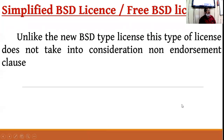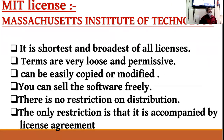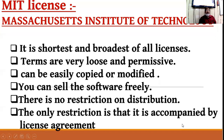Simplified BSD license also provides very few restrictions, but the only difference is that it does not have any endorsement clause. The next license is MIT License - Massachusetts Institute of Technology License. It is the shortest, broadest, and very permissive license. You can easily copy, distribute, and sell the software freely with no restriction on sharing or distribution.